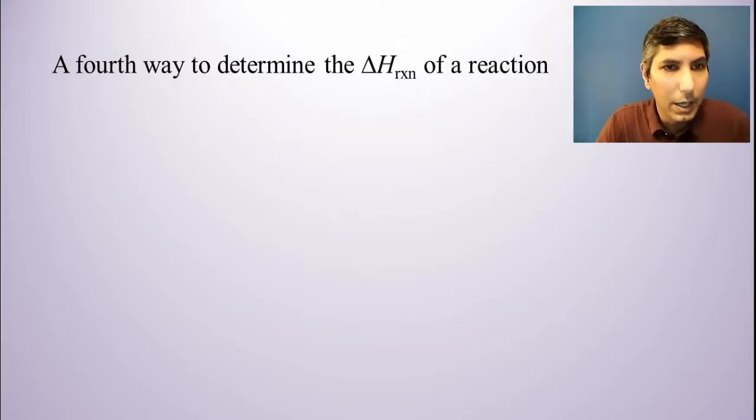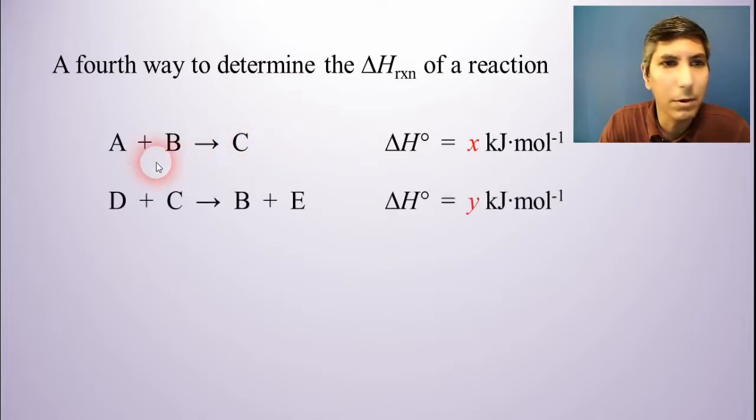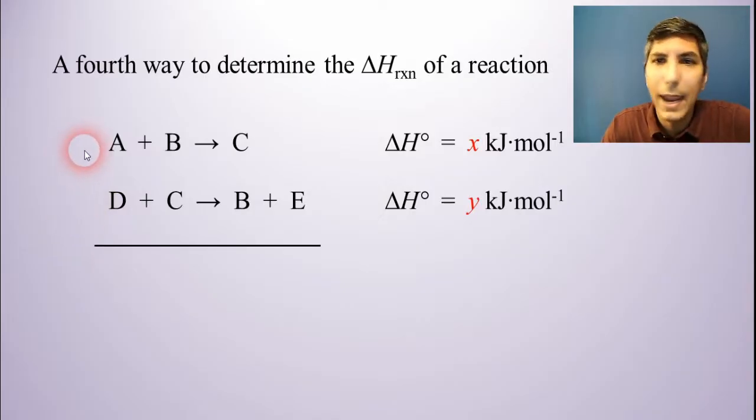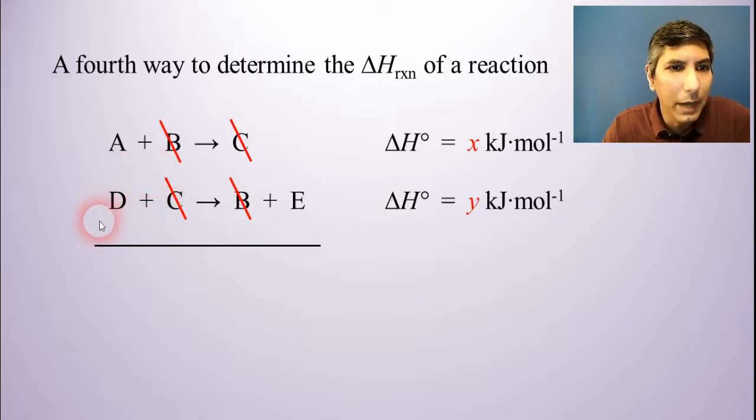Now this is a pretty neat little trick that you can use. If you take two reactions, these are two completely different chemical reactions: we have A plus B yields C with a specific enthalpy of reaction we'll call that X, and here's a separate reaction underneath it, D plus C yields B plus E, and its change in enthalpy is a completely different value Y. You might notice that you can take these two reactions and actually add them together to get a third completely different reaction. The B's will cancel and the C's will cancel, and when you add the two reactions, you get A plus D yields E.